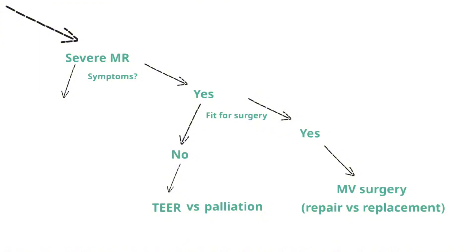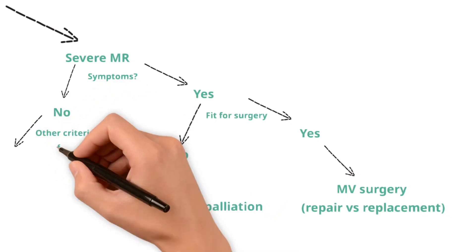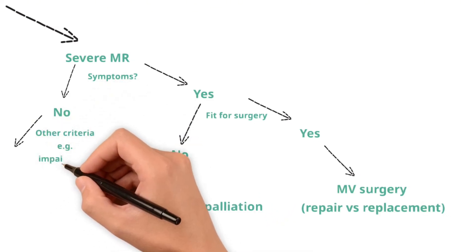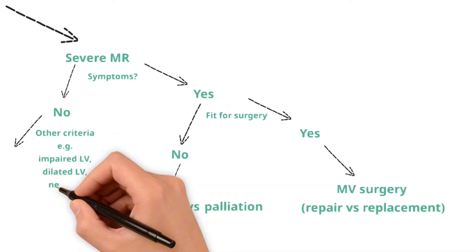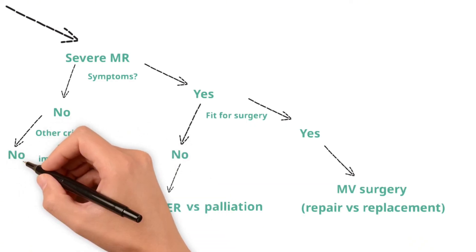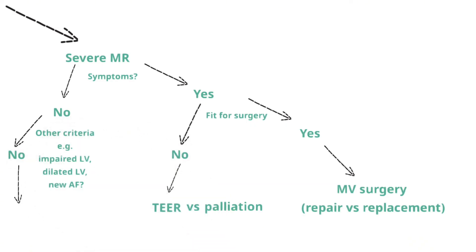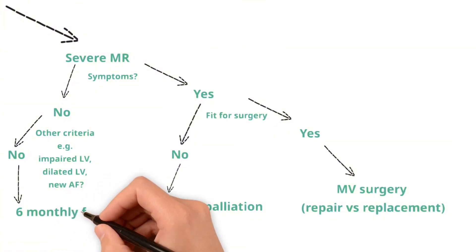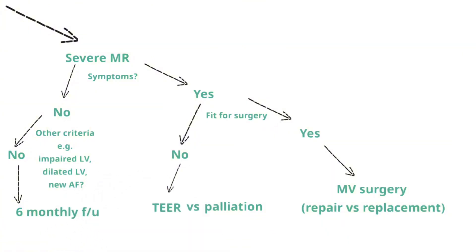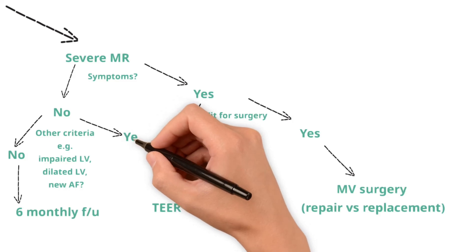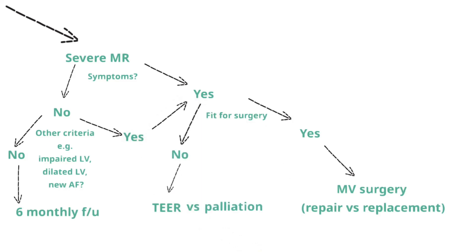In contrast, patients with severe primary mitral regurgitation who are asymptomatic may be followed up with a six-monthly echocardiogram and clinical assessment, unless they meet other criteria, such as having an impaired ejection fraction, dilated left ventricle, new-onset atrial fibrillation, or significant pulmonary hypertension. These indicate that the left ventricle is starting to decompensate and suggest the need for surgical valve intervention.